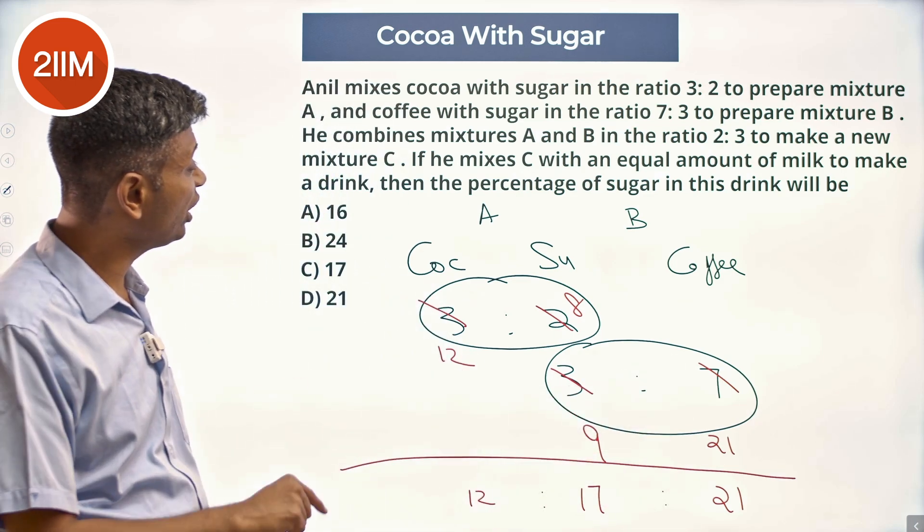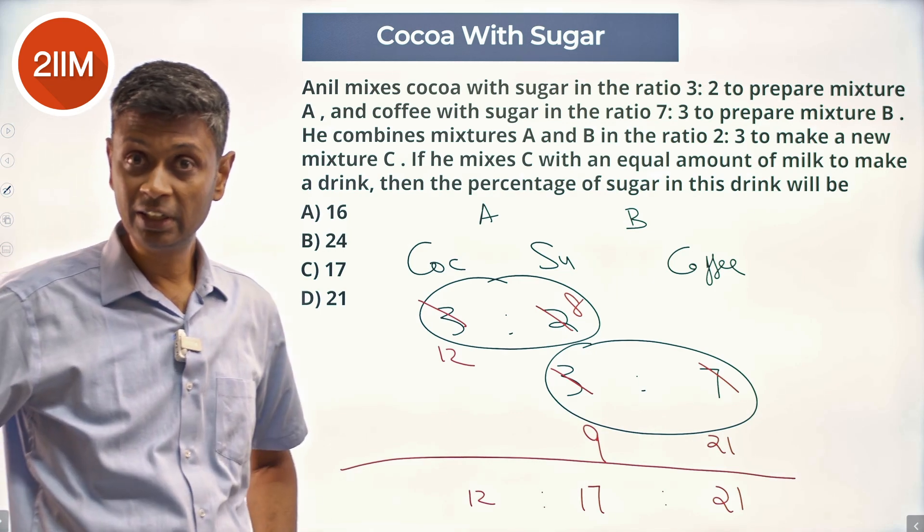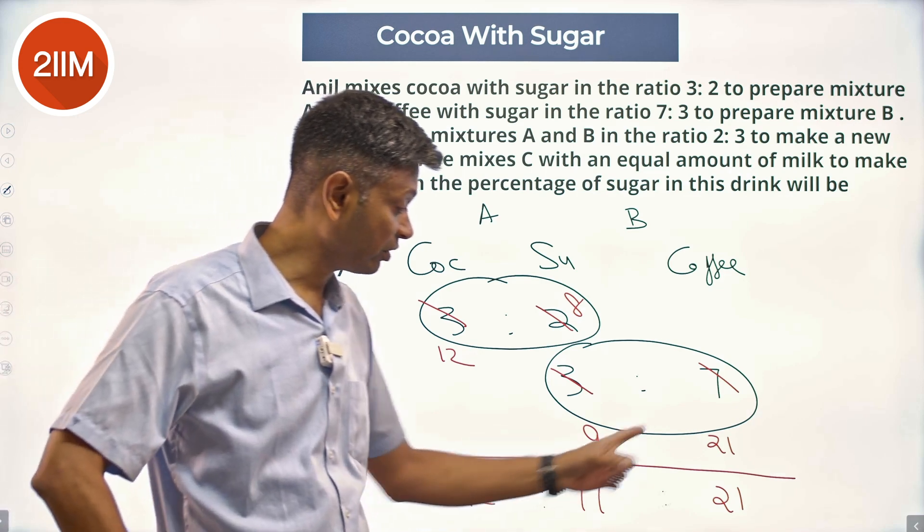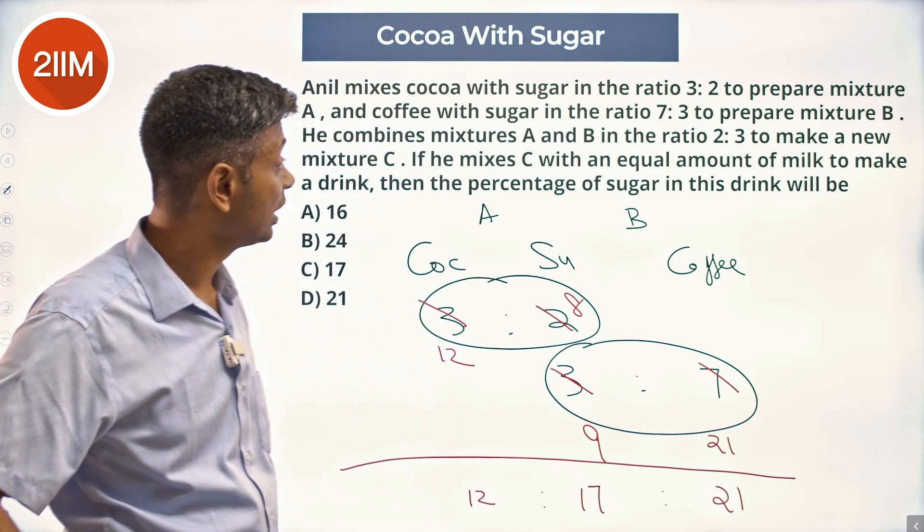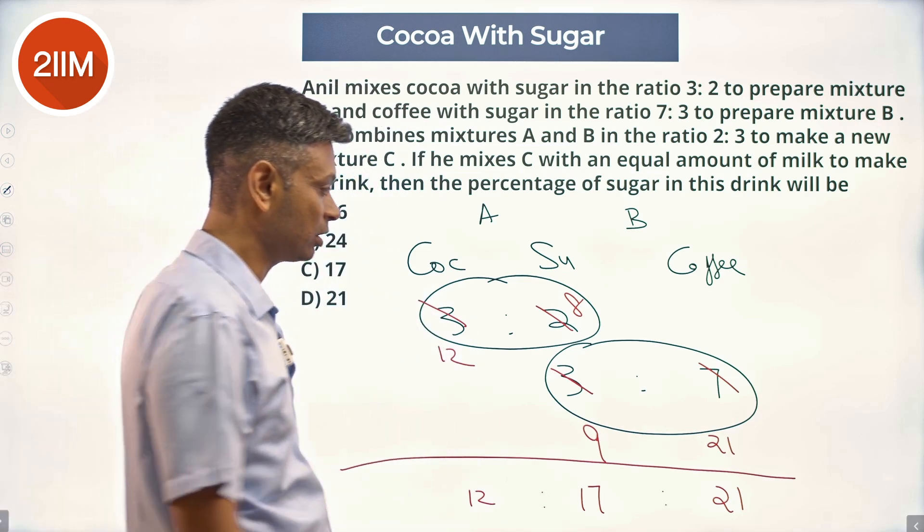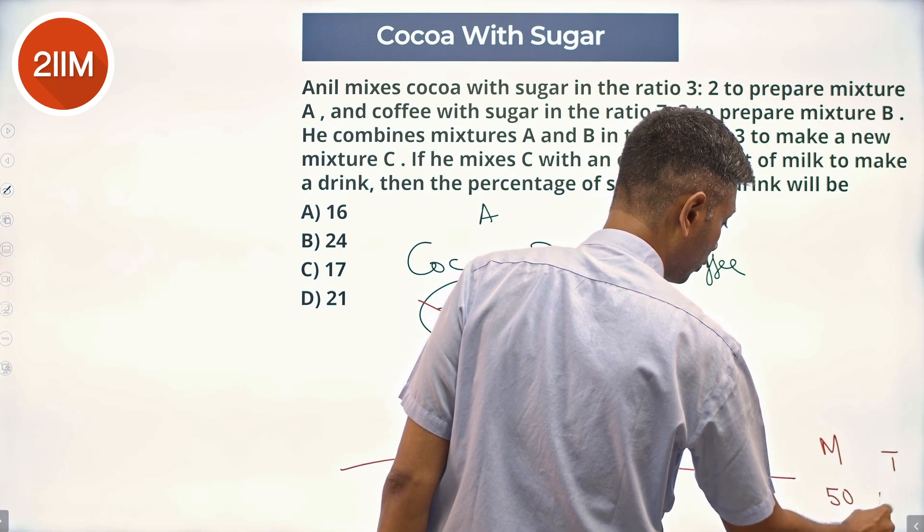If he mixes C with an equal amount of milk to make a drink, then the percentage of sugar in this drink will be... He is mixing these 3 in the ratio 12 to 17 to 21. 12 plus 17, 29 plus 21, 50. Equal amount of milk. That means, the milk quantity is 50. Total is there 400.